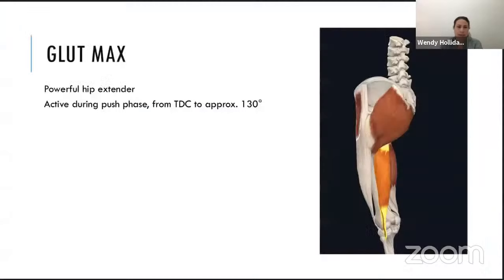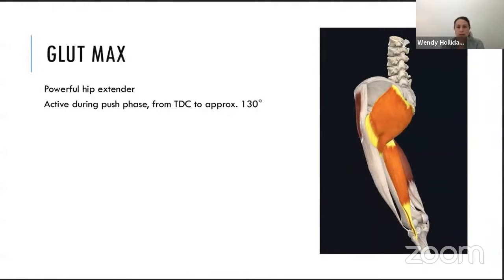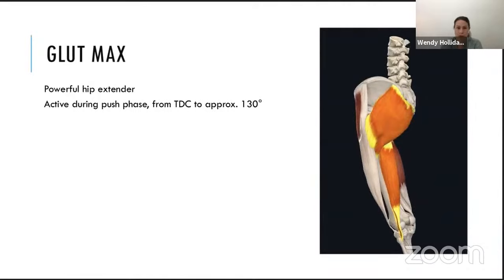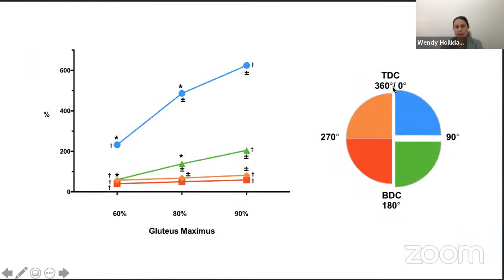Gluteus maximus is a powerful hip extensor, active during the push phase from top dead center to approximately 130 degrees of the pedal revolution. Looking at the research, it works from top dead center down to bottom dead center. As riding intensity increases, the muscle works hardest in quadrant one — where we saw significant changes from 60 to 80%, 60 to 90%, and 80 to 90% intensity. The other quadrants were also significant, mainly from 60 to 90% intensity.